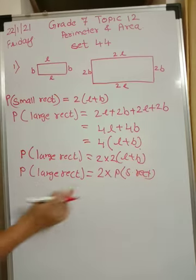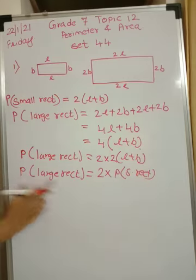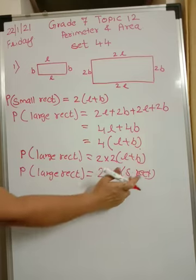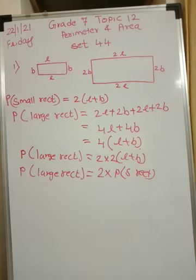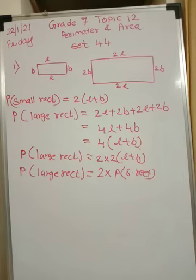So the larger rectangle's perimeter is 2 times the perimeter of the smaller rectangle. In other words, the perimeter of the larger rectangle, which is formed after doubling the sides, is 2 times the perimeter of the smaller rectangle.